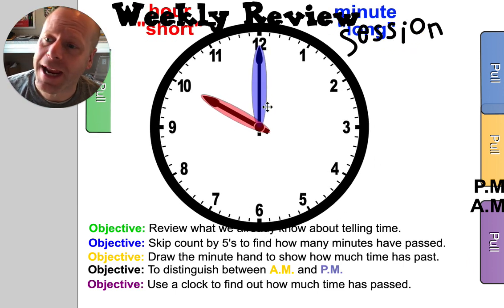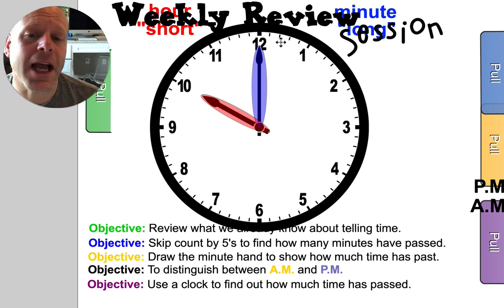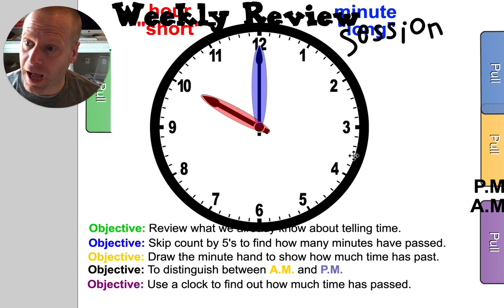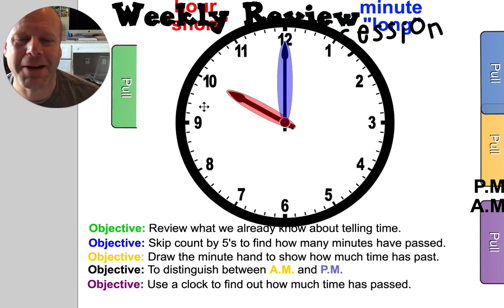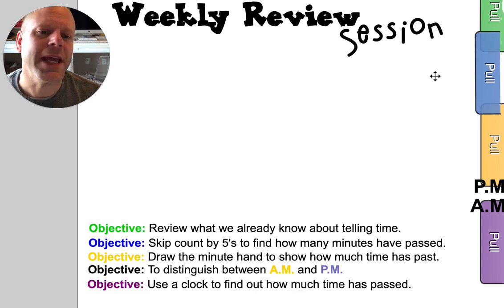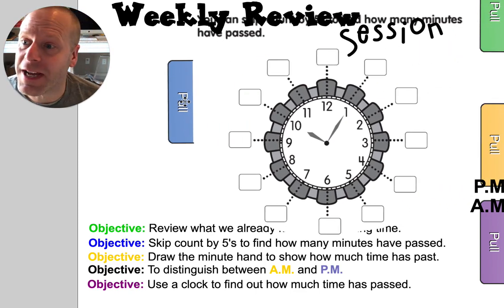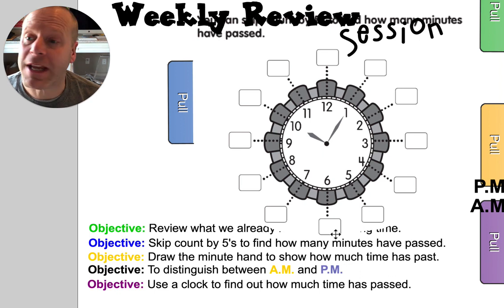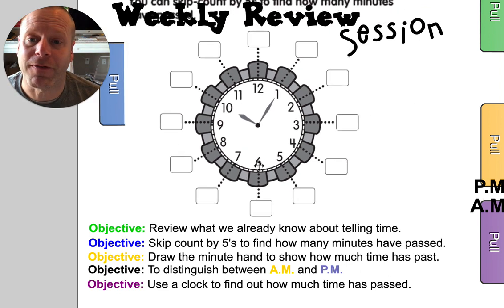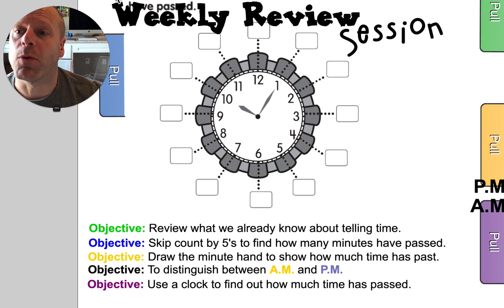Think about the two hands and how the red hand points to the number and how the blue hand is counting those minutes around the clock. You have to count by fives to find some of those minutes. Think about how we practiced counting by fives all the way around, and we even memorized some of the landmark fives that are super easy if we just remember where they are.